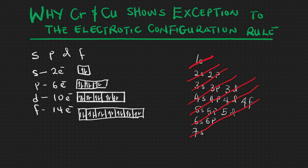Following the diagonal arrows through the triangle, the energy order is: 1s, 2s, 2p, 3s, 3p, 4s, 3d, 4p, 5s, and so on. Note that regardless of the number before the letter, all s orbitals still hold a maximum of two electrons, and all p orbitals hold a maximum of six.